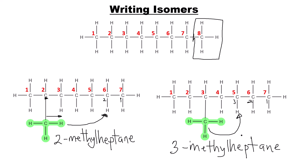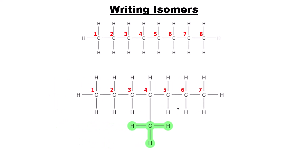For the next isomer, shift the methyl group again from carbon three to carbon four. This hydrogen moves back and the methyl group goes to the fourth carbon. The name of this isomer is 4-methylheptane — still heptane because we still have seven carbons in the main chain.